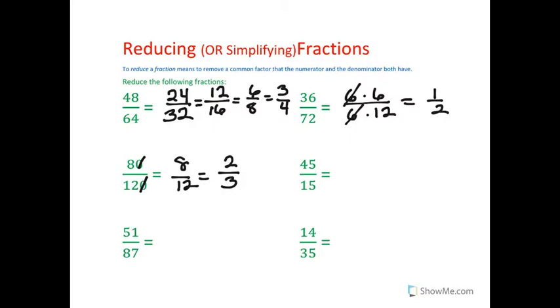45 and 15, they end in a 5. That means 5 goes into both of those numbers. 45, again, you have two different ways you can do it. 9 times 5 and 15 is 3 times 5. Get rid of your 5's. And you're left with 9 thirds, which is equal to 3.